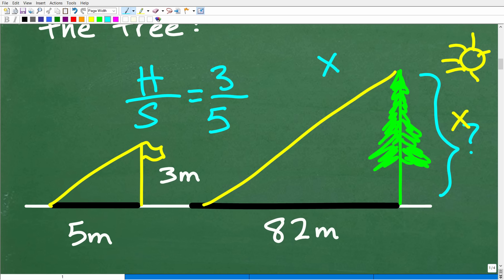This height is what? Well, the height is X, right? We don't know that. And the shadow is 82. Okay, but we do know that these two fractions are in proportion, or these two ratios are in proportion, meaning that they are equivalent. Okay, they're equal to one another. And by definition, two equal fractions is a proportion.